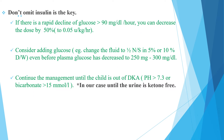Do not omit insulin — this is the key. Despite the patient's glucose level, insulin should not be omitted. If there is a rapid decline of glucose — more than 90 mg/dL per hour — we can decrease the dose by 50% or consider adding glucose, such as making the fluid half normal saline and half 5% dextrose, even before plasma glucose has decreased to less than 300 mg/dL. Continue DKA management until the child is out of DKA: pH greater than 7.3 or bicarbonate more than 15 mmol/L, or until urine is ketone-free.